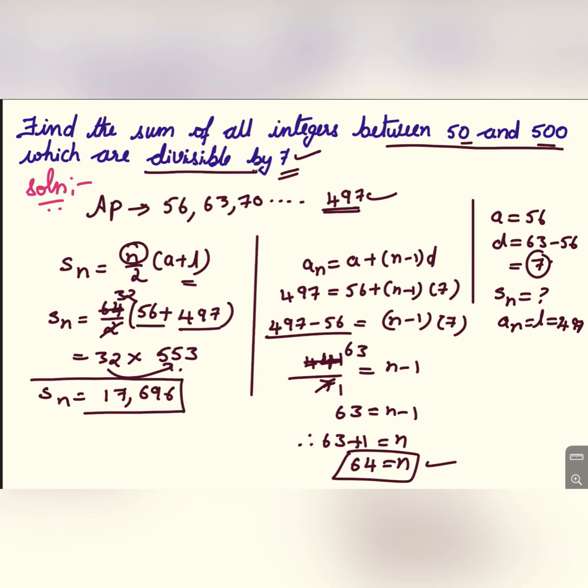The sum of all the terms which are divisible by 7 and which are in between 50 and 500. Thank you for watching. Please like share and subscribe to my channel. Thank you once again.